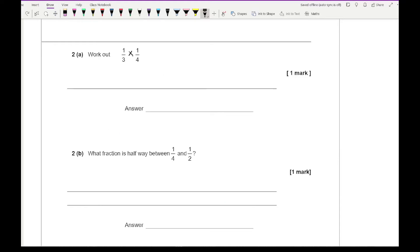Moving on to question 2a, it says work out 1 third times 1 quarter. When multiplying fractions, we multiply the two numerators which gives us 1, multiply two denominators which gives us 12, then simplify where possible. This can't be simplified, so the correct answer is 1 over 12.